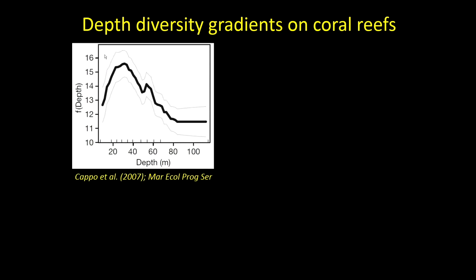On depth diversity gradients on coral reefs: most researchers studying coral reefs probably only study the top 5 or 10 metres. But if we look at how biodiversity is distributed with depth on coral reefs - this is for fish on the Great Barrier Reef - we find that the shallowest areas often have lower biodiversity than these intermediate depths. This hump-shaped pattern is quite common when we look at how biodiversity distributes over depth, and also with altitude.